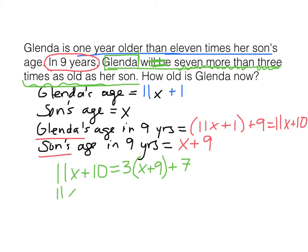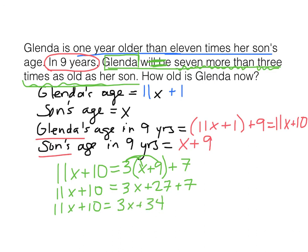Distribute and combine like terms: 11X plus 10 equals 3X plus 34. Subtract the smaller variable term — 8X plus 10 equals 34. Subtract 10 from each side — 8X equals 24. Which means X equals 3.